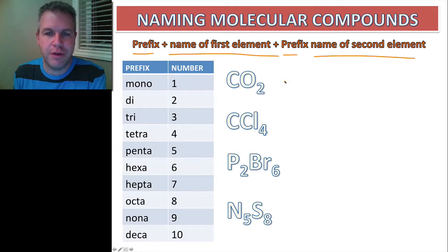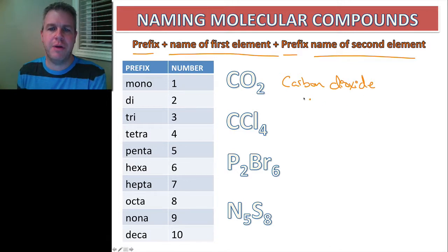So when we look at the first one, I'm going to call this carbon dioxide. So a couple of rules that we need to pay attention to: first of all, if we have a lone atom here we're not going to call it mono to begin with.